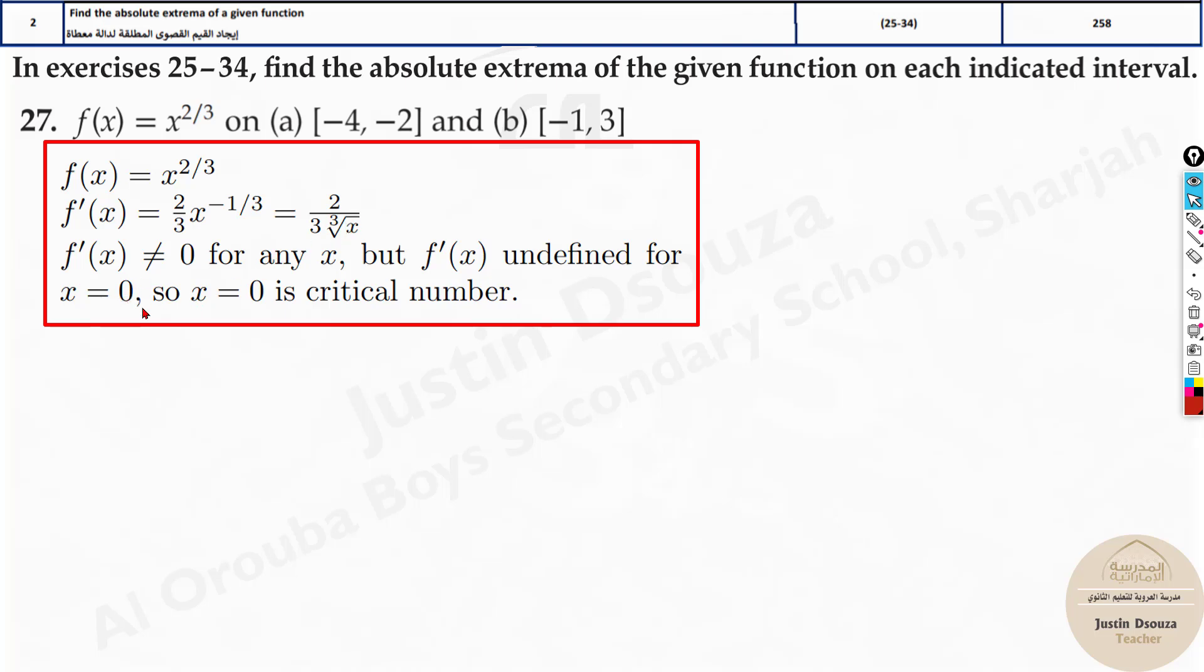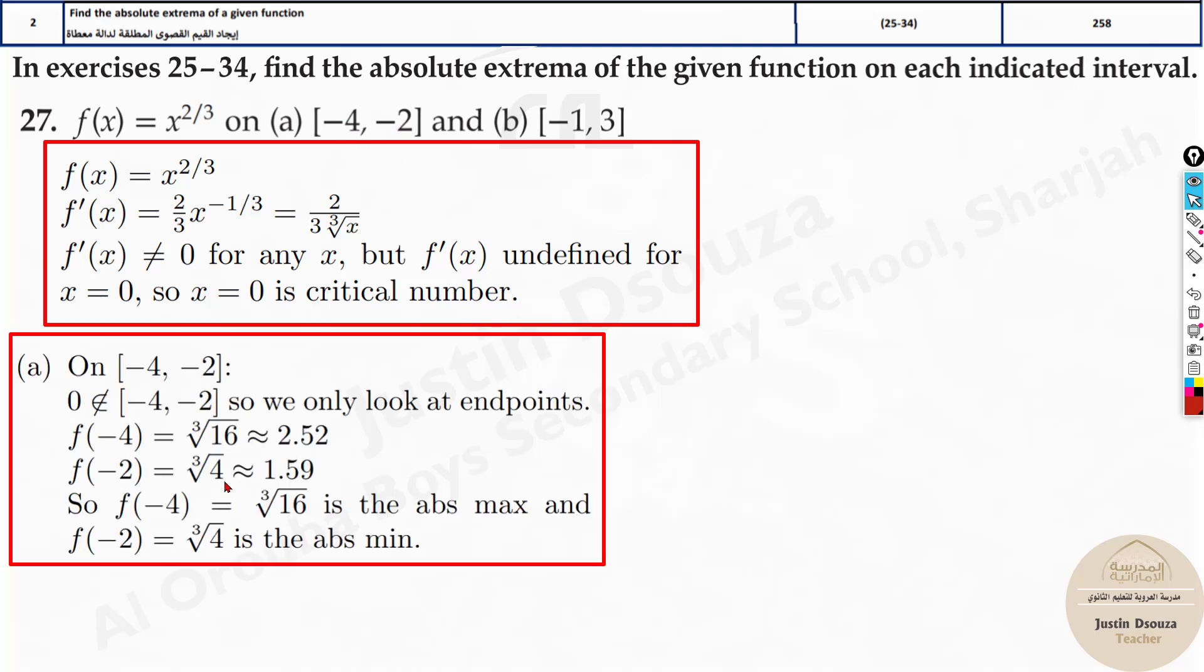So x equals 0 is a critical number. For the first one we have to take these two intervals, but does 0 fall within this? No. So we just take minus 4 and minus 2 for part a. It's only minus 4 and minus 2 because 0 doesn't belong here. Just derive it, you will understand critical number is 0. Leave that. Just substitute minus 4 instead of x and put minus 2 instead of x and get the values.